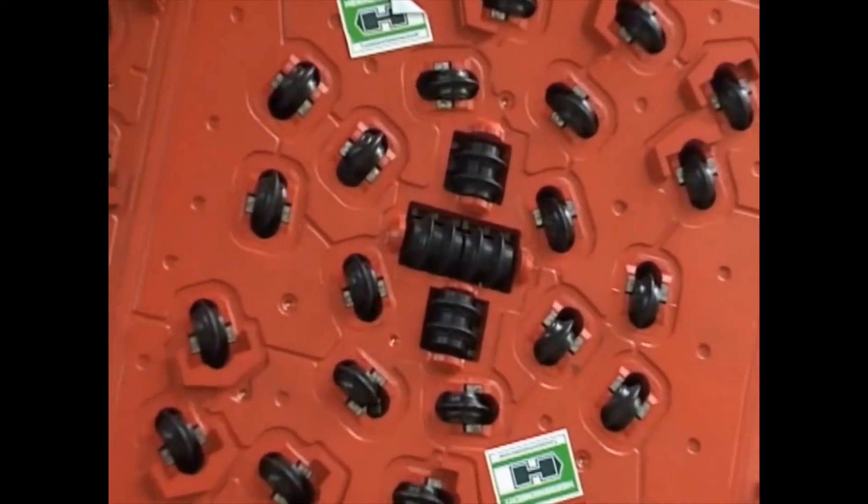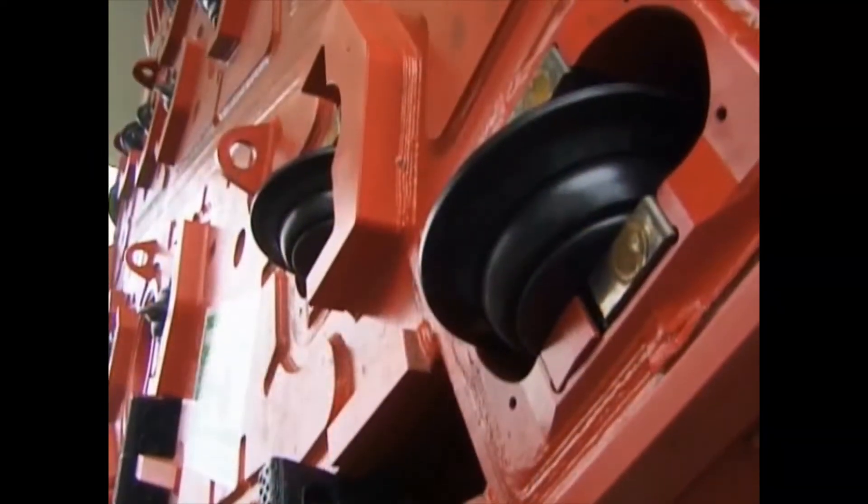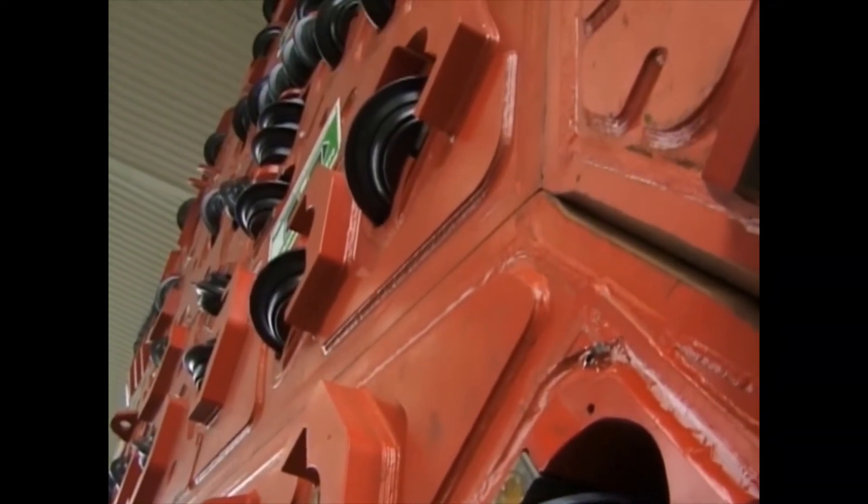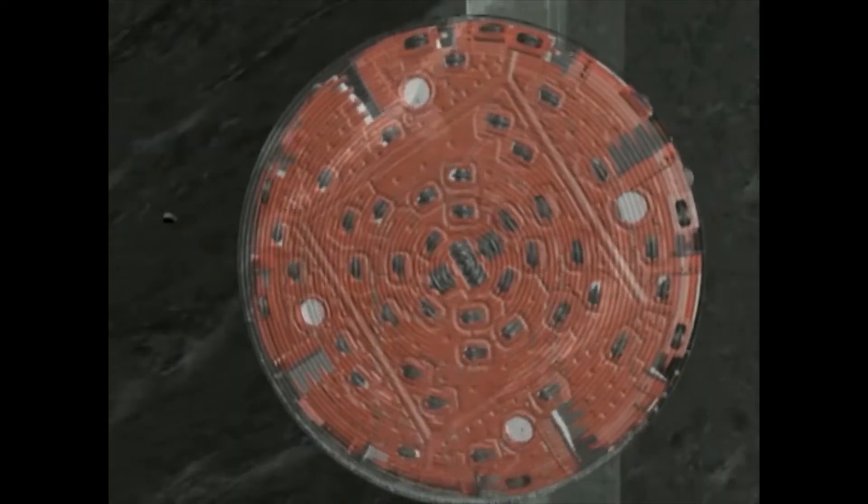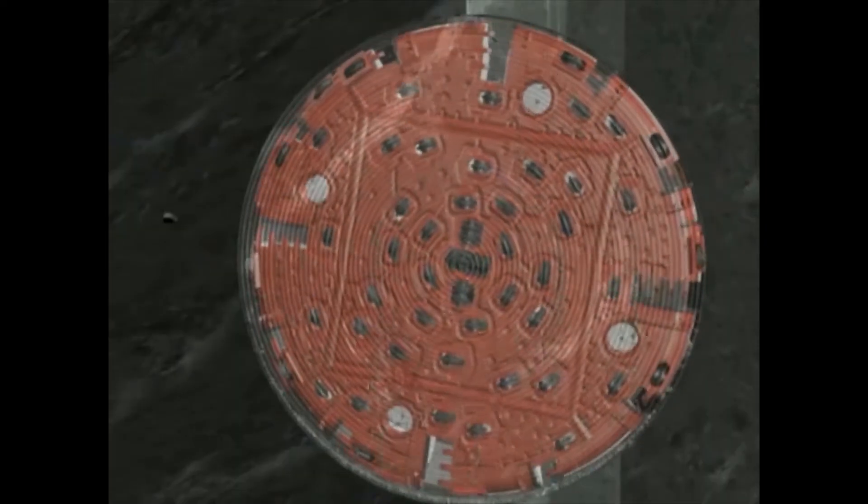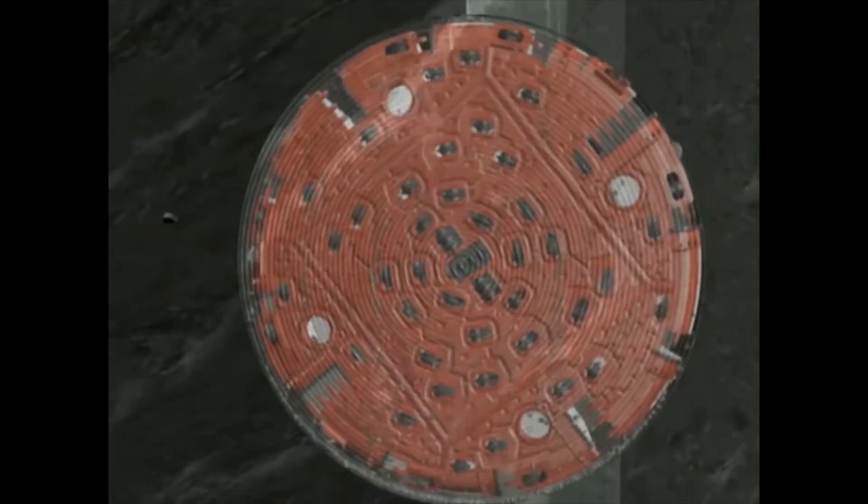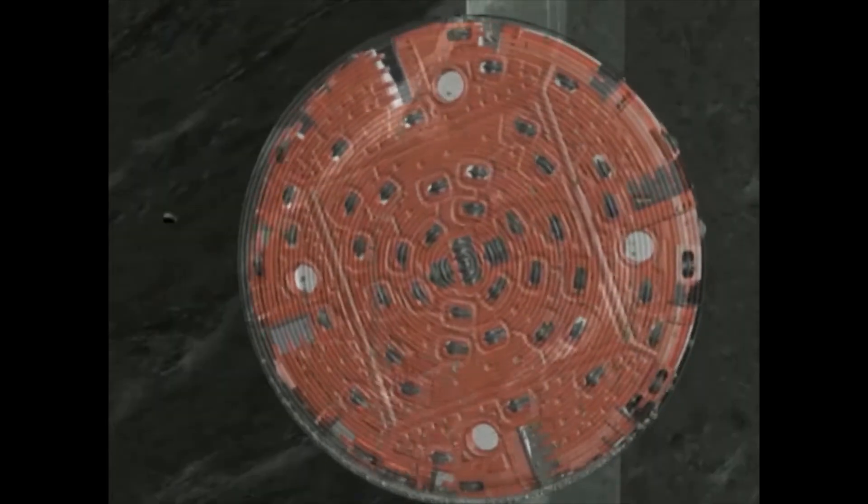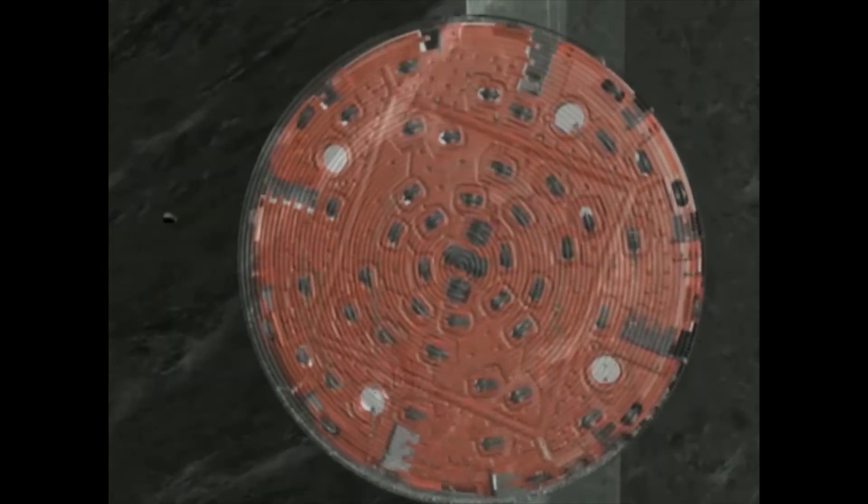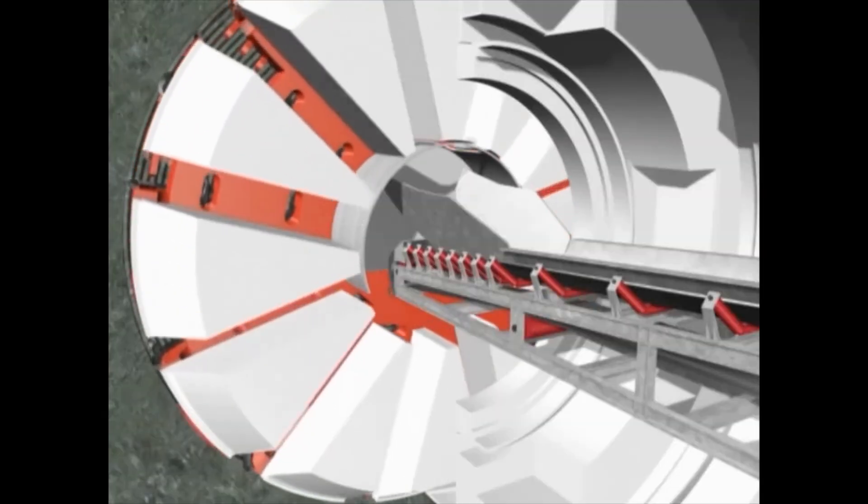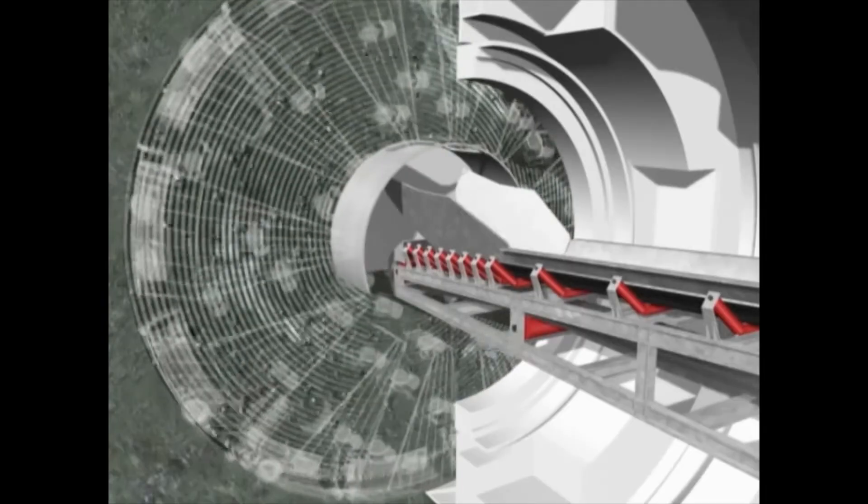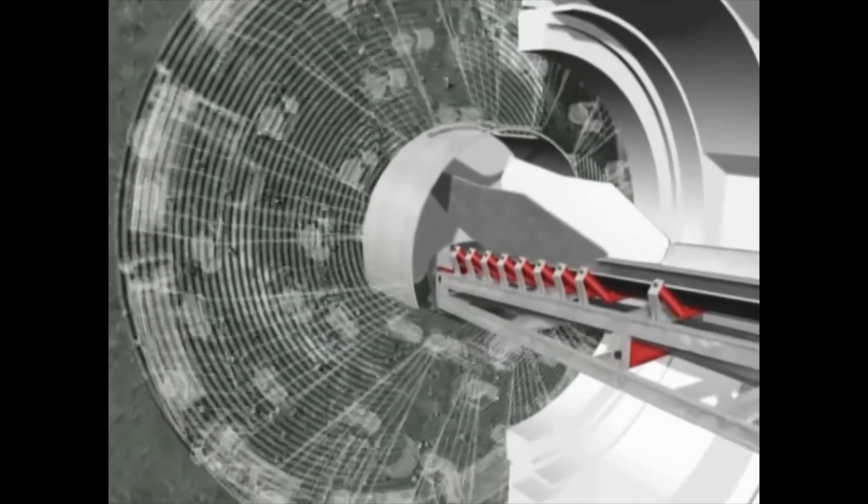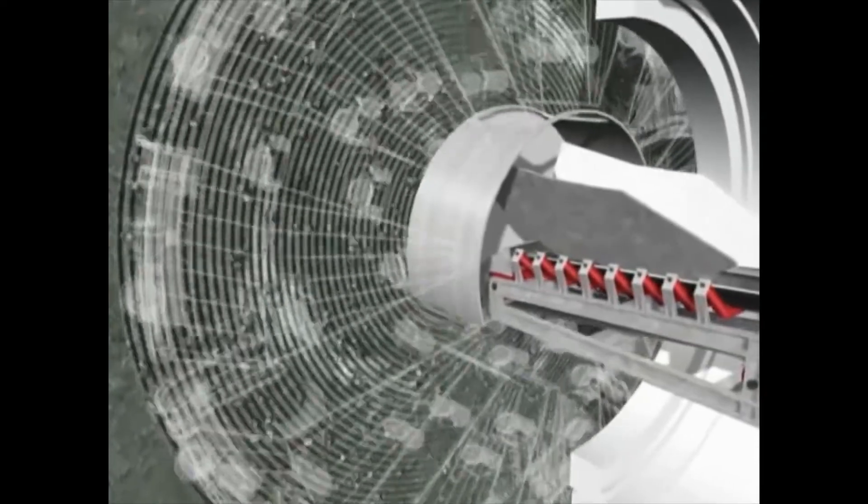The cutter head of a double shield TBM is equipped with special cutting tools for hard rock excavation. Located in the cutting wheel, 60 steel rollers with a diameter of 17 inches, so-called discs, are rolling along the tunnel face by the rotating motion of the cutter head. Each individual disc presses against the tunnel face with 27 tons. The rock is crushed.